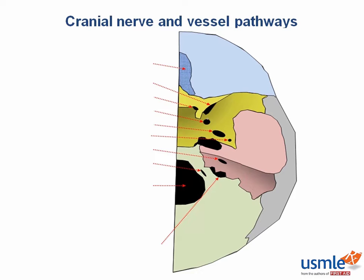There are many holes in the skull called fossa or foramina that the cranial nerves and other structures pass through to exit the skull. We're going to go through these from anterior to posterior. Most anterior is the cribriform plate. This isn't a single opening but rather a meshwork of many tiny holes that cranial nerve 1 passes through. Cranial nerve 1 is for the sensation of smell and lies above the nasal cavity, in the ethmoid bone.